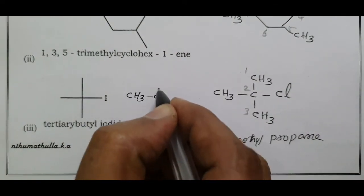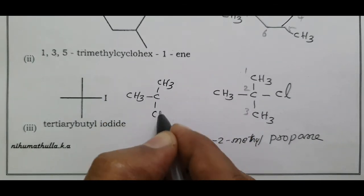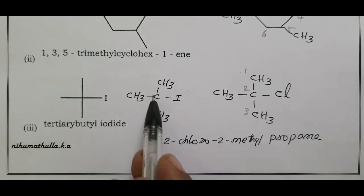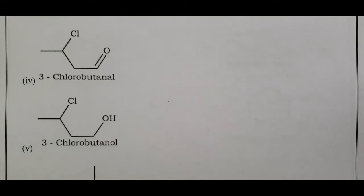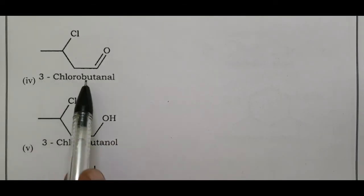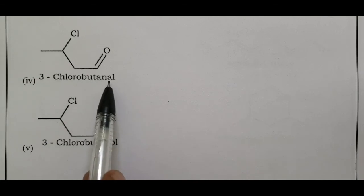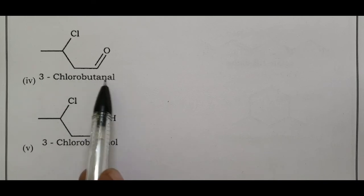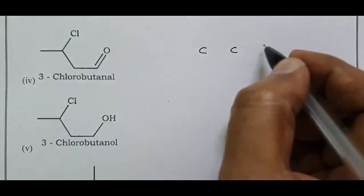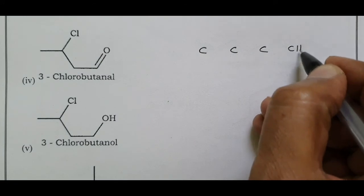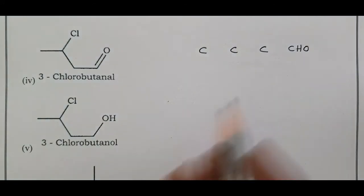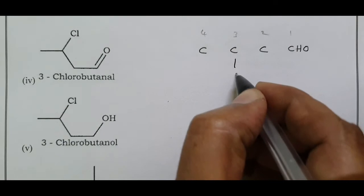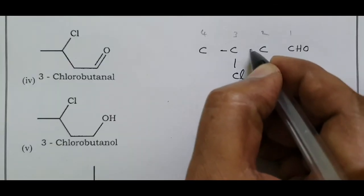This structure contains an aldehyde functional group (CHO). For a four-carbon chain: carbon–carbon single bonds form the backbone. The aldehyde carbon is carbon one, so we number 1, 2, 3 from the aldehyde end. Fill remaining valences with hydrogen.